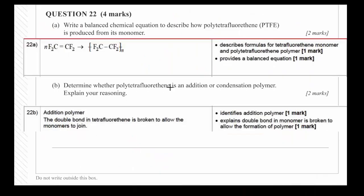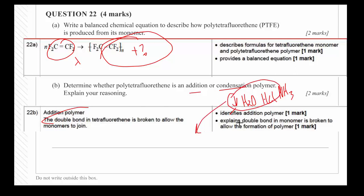So the next one, addition or condensation. Condensation, you need to get a small molecule out. So it's usually water, but it can be HCl or NH3 or maybe something else. And you can see here that nothing is coming out from this equation over here. And they're just basically adding this plus adding another one. So that's why it's addition. So addition polymer, one mark. Explain your reasoning. I really think they should say that in there, that they should say there's nothing coming out. And then double bond is broken to allow monomers to join.